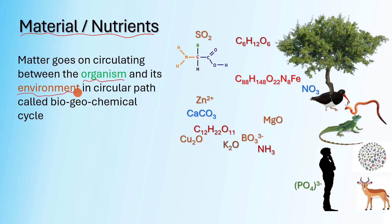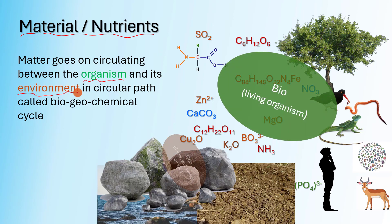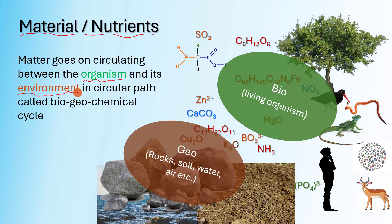These cycles are called biogeochemical cycles. Why are they called biogeochemical cycles? Bio means living organisms, and Geo means rocks, soil, etc.